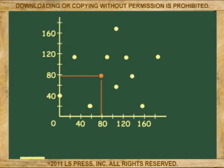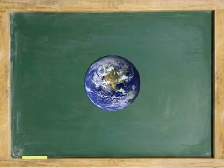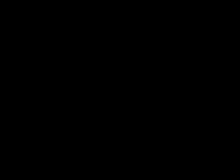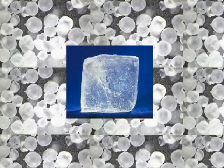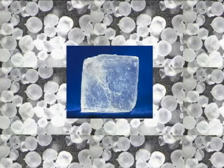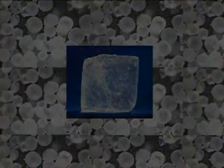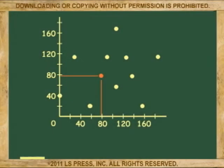For example, by this definition the earth could be a point, and so could a grain of salt. Size is not important, only location.